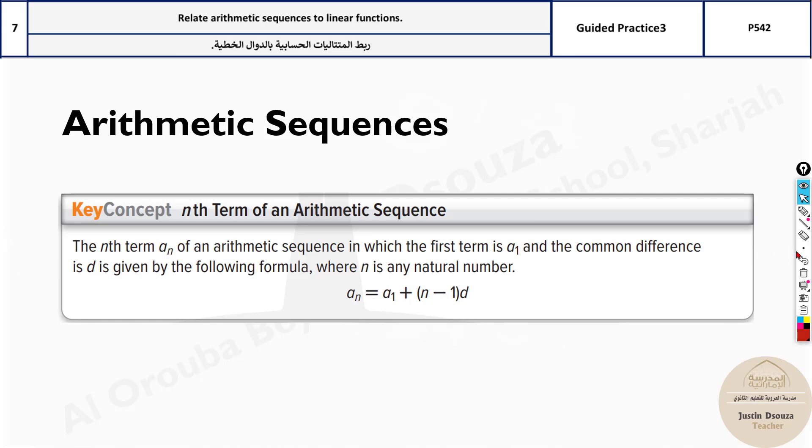Now, what is this an? This is an explicit formula in the sense, imagine you want to find the sixth term of the sequence. All you need to have is a6.